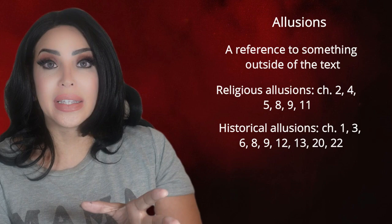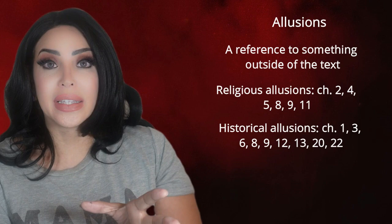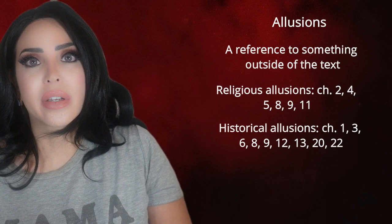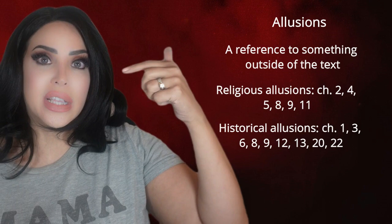Chapter five has a biblical allusion to Cain, the man who commits the first murder in the Bible out of jealousy. God punishes him with a mark on his brow — so like Hester, he carries a mark for the rest of his life.